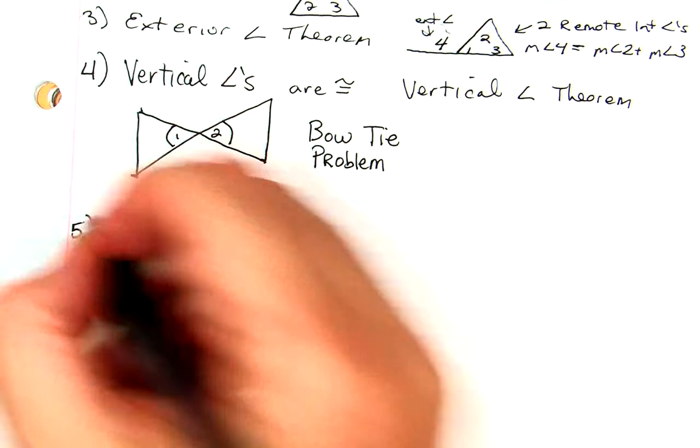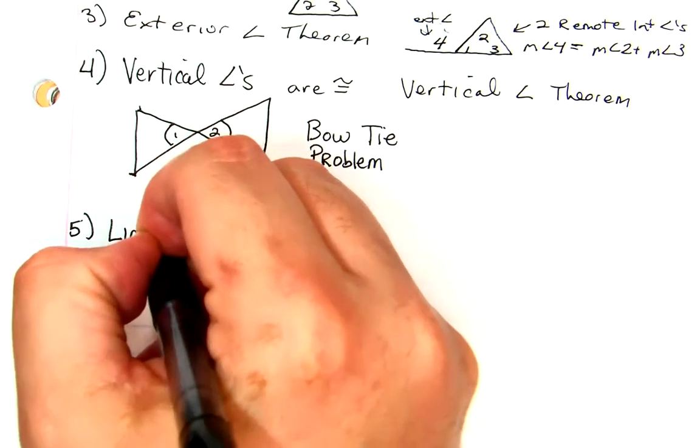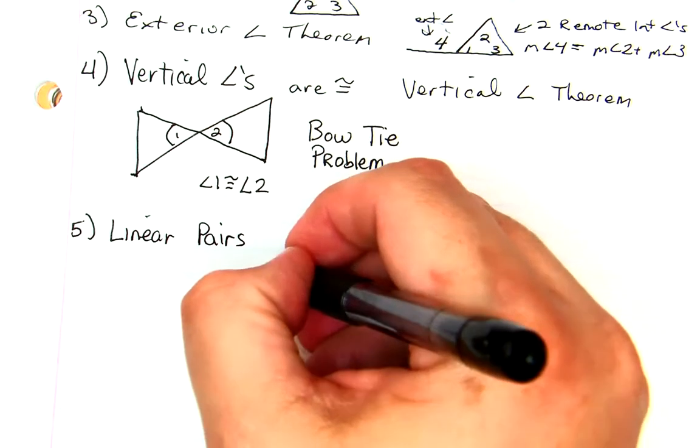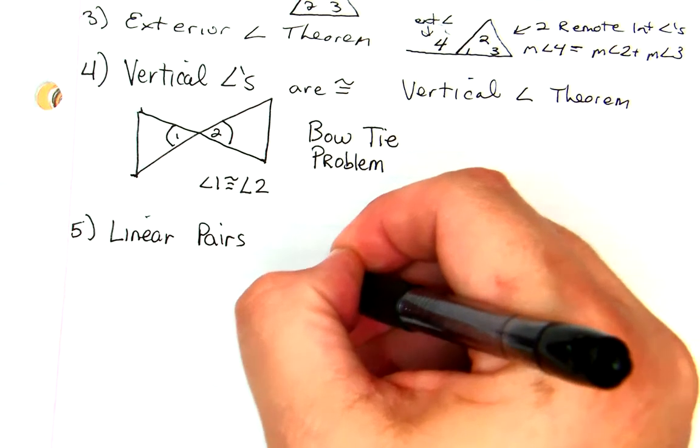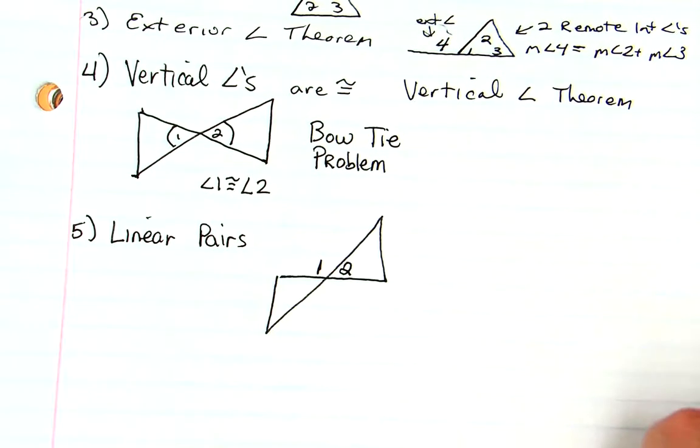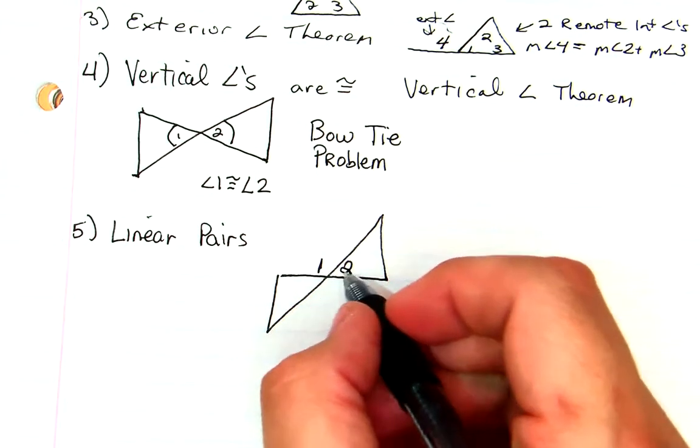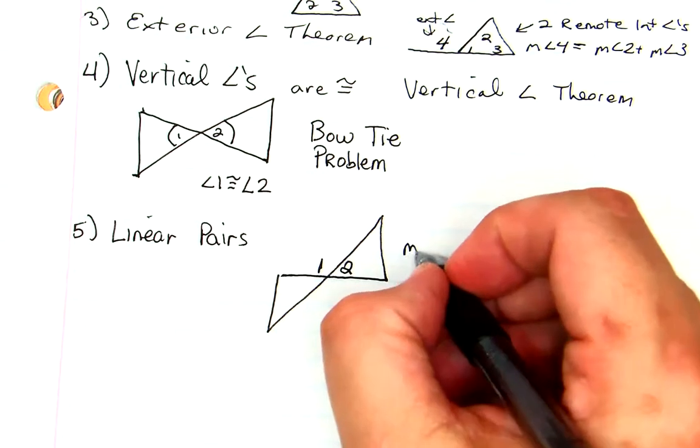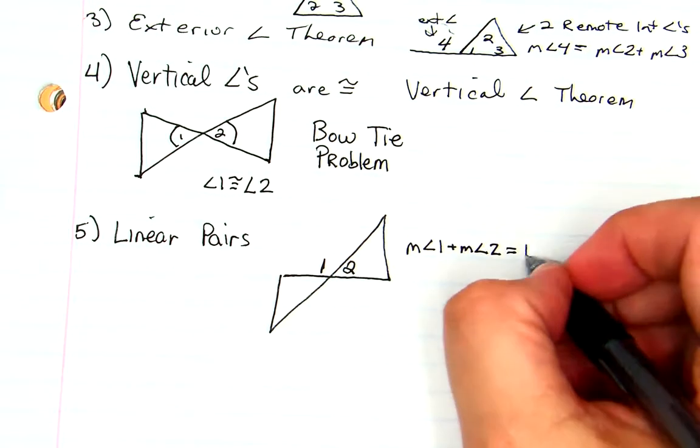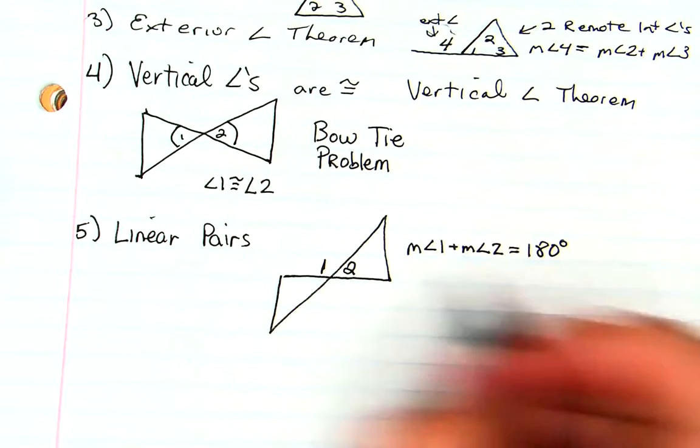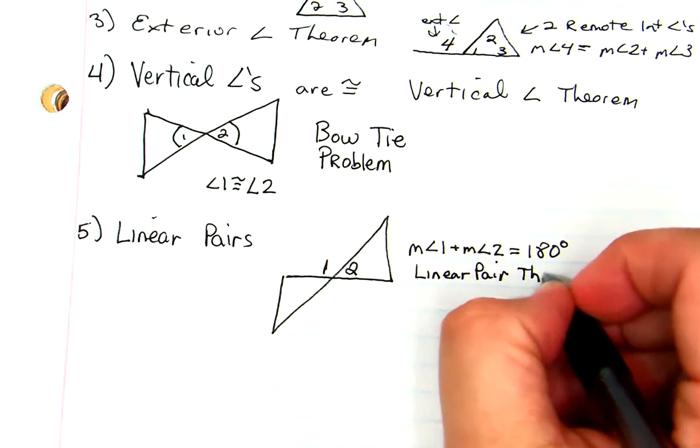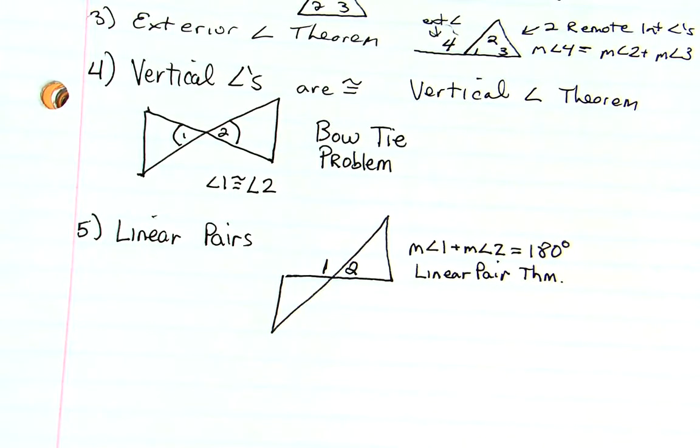And five, linear pairs. If you have one and two here, that's a linear pair. So we can say the measure of angle one plus the measure of angle two is equal to how much? 180 degrees. And this is the linear pair theorem. So that's another thing that you have at your disposal.